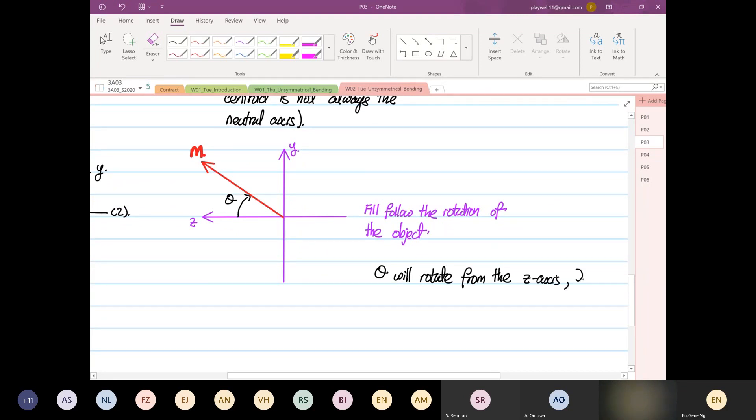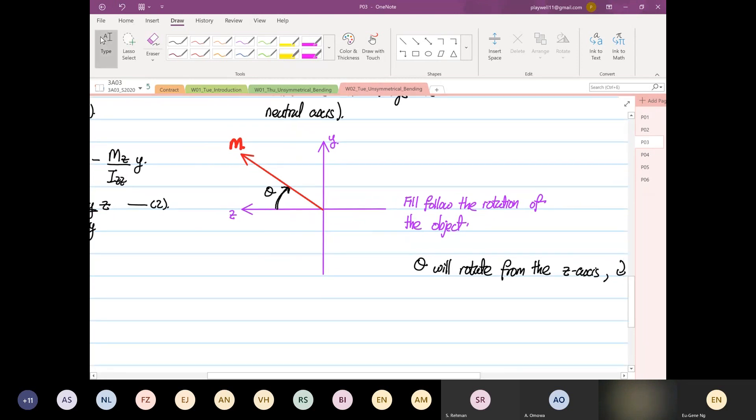And clockwise is positive. This has nothing to do with right-hand rule. How we draw it? Because we have this orientation, we declare that clockwise is positive. So we know, we also are aware that this will break down, right, the moments into two components.